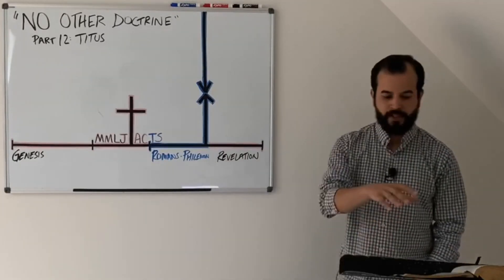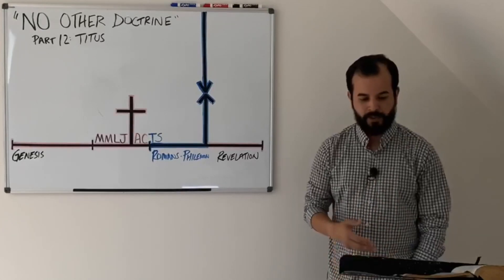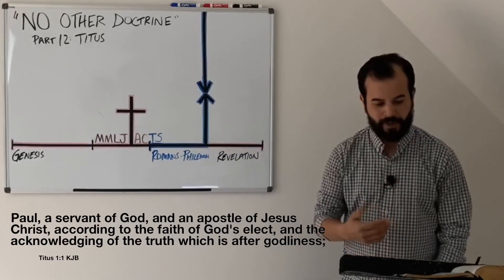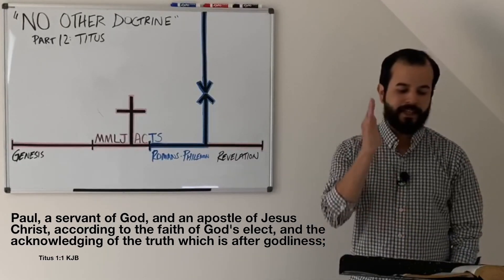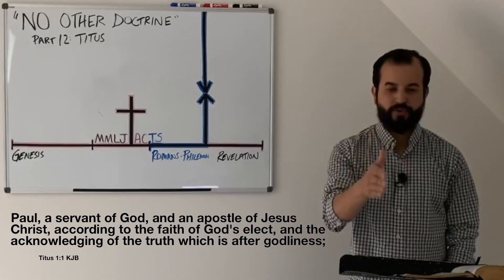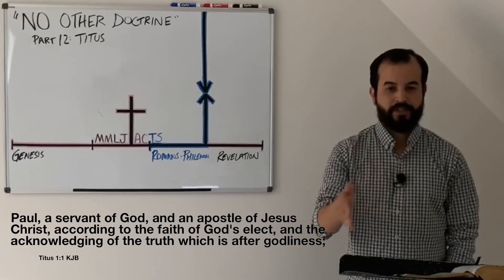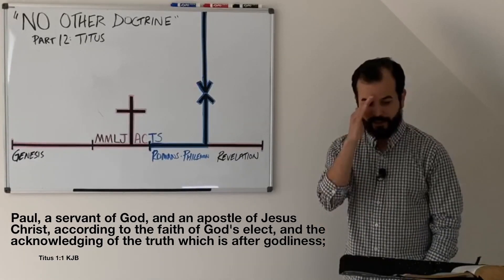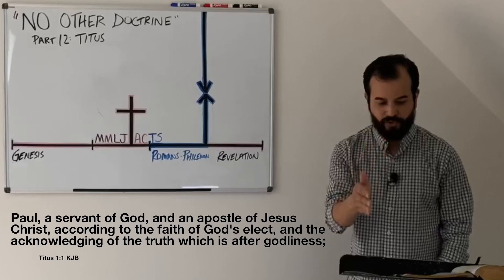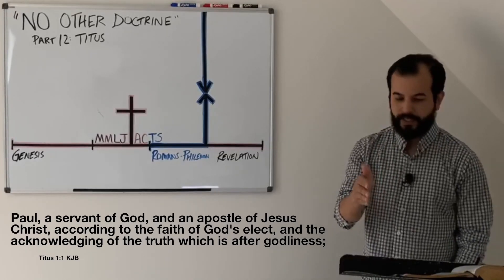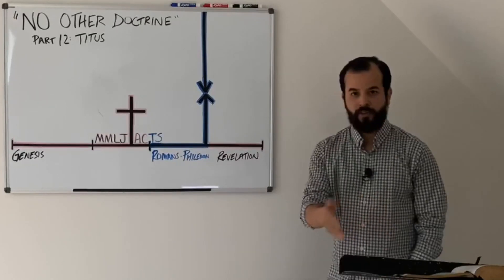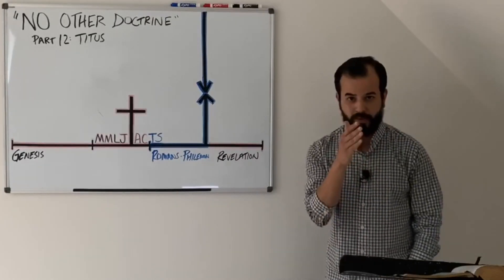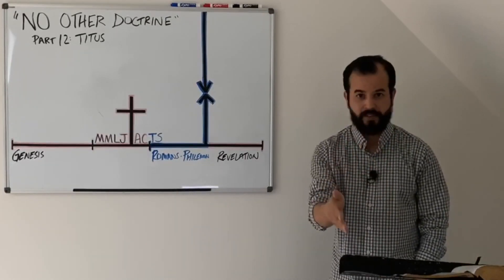A couple things that we want to talk about here and what we just read. He calls himself a servant of God, an apostle of Jesus Christ according to the faith of God's elect and the acknowledging of the truth which is after godliness. I want to talk about the acknowledging of the truth and what that is. It's simply acknowledging all of the Bible as it is where it says it to whom it says it to. It's truth.